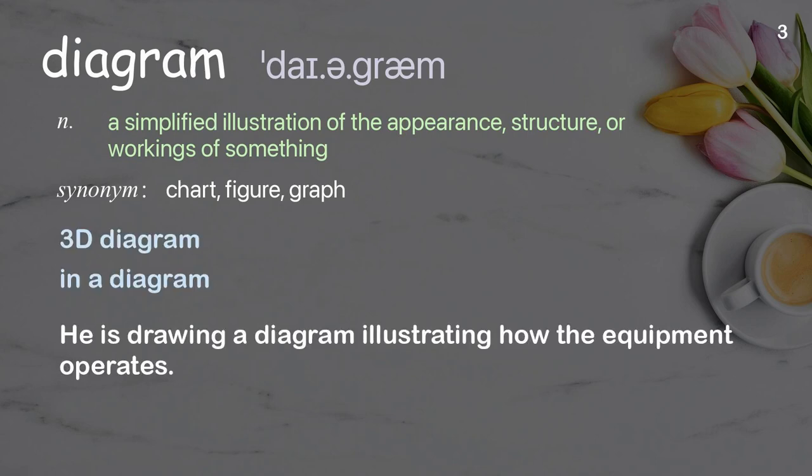Examples: 3D Diagram. In a diagram. He is drawing a diagram illustrating how the equipment operates.